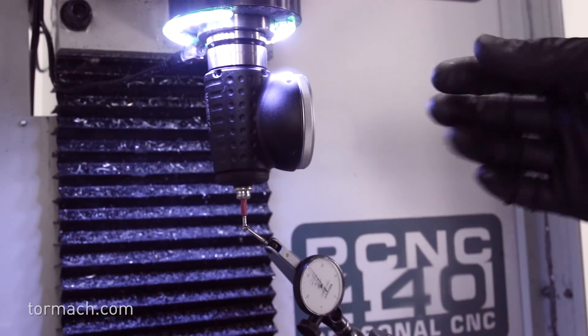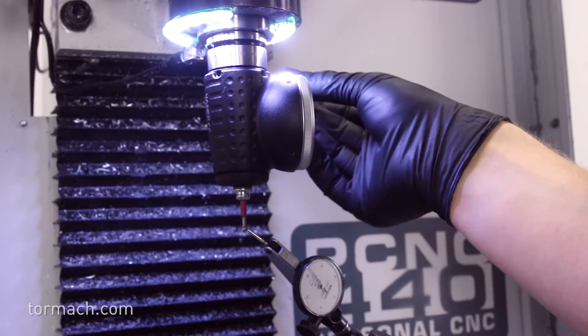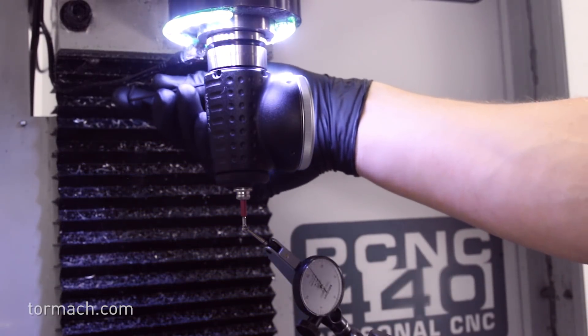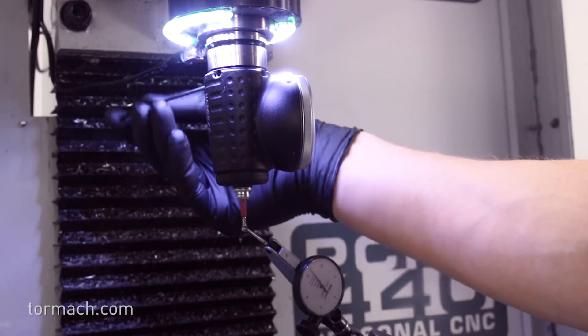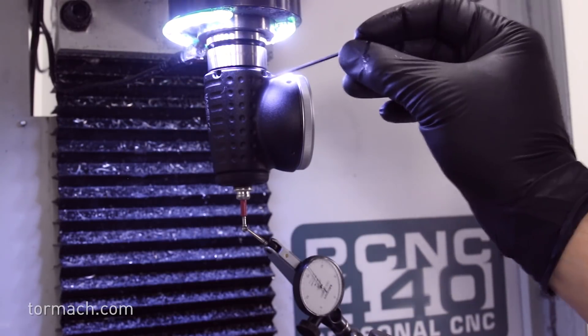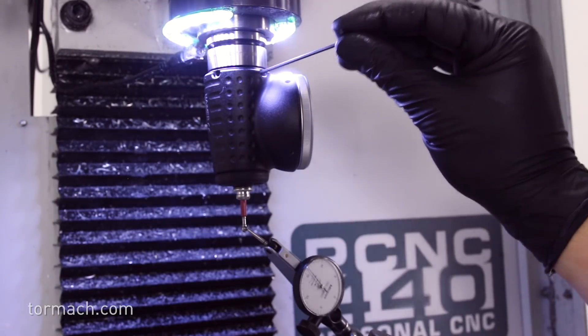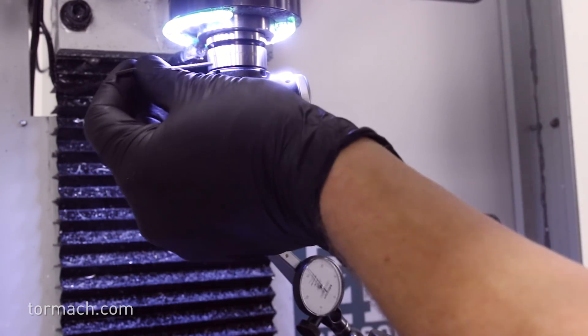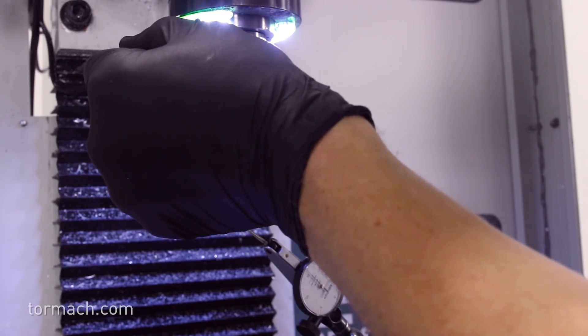You see here we're down to about a thou and a half and now we're in between two of the set screws here. So what I'm going to do is loosen both on the back side and I'm going to try to move it half with each screw. I'm going to move this one to use up just a little bit of that number and then move the other one about an equal amount, just trying to keep it running true as we go.